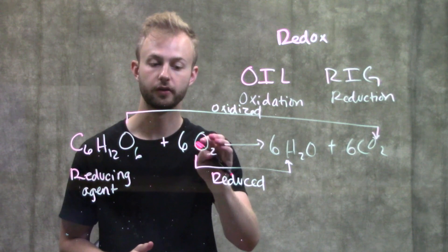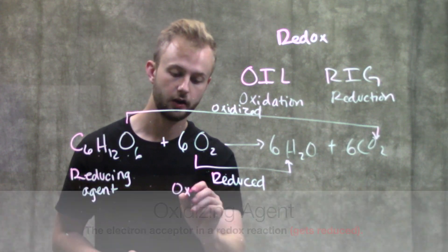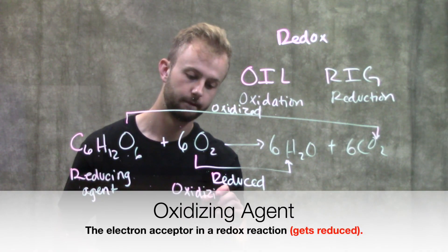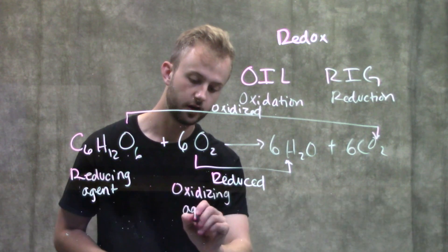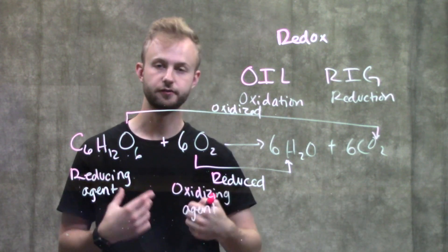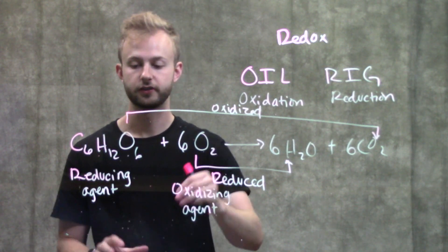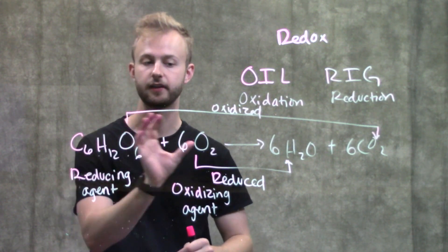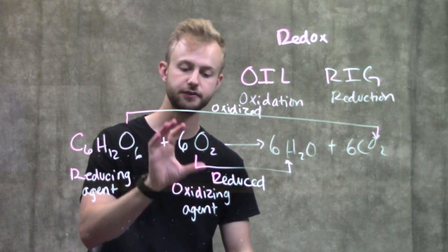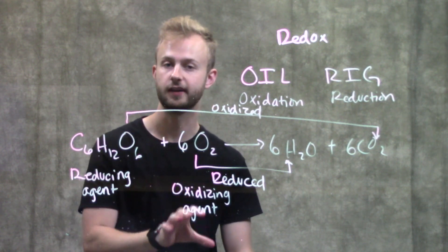The same thing goes for oxygen, except it'll be our oxidizing agent. This oxygen is going to gain electrons from somewhere, which means something else has to give up those electrons. So this oxygen is causing glucose to give it its electrons, and therefore oxygen is the oxidizing agent.